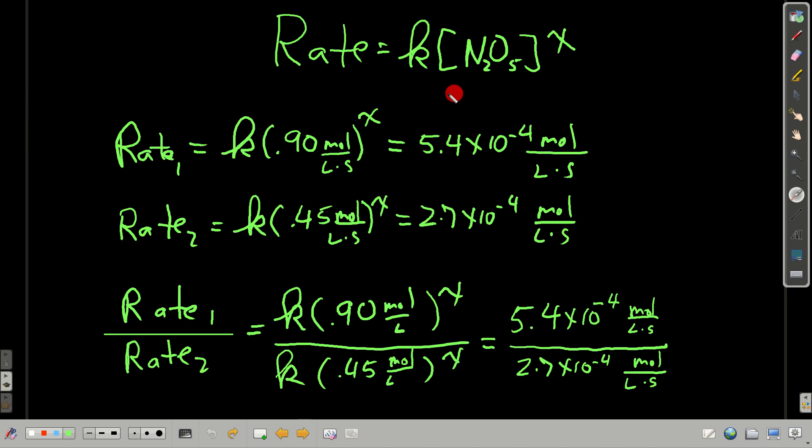So we know the rate law looks like this. We're trying to find X. So looking at the instantaneous rate at those two points, we can say that the rate is equal to K, concentration of dinitrogen pentoxide. So the first one, we know the concentration, 0.90 moles per liter to the X. Second, 0.45 moles per liter.